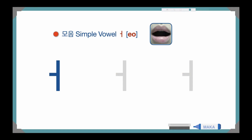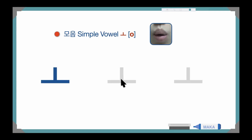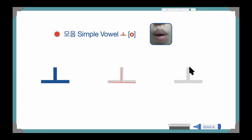And let's study the next one. This is 'oh', 'oh', 'oh'. Like this shape of your mouth — make your mouth like this. If you think about 'orange', maybe it will be easier to mimic this vowel: like 'orange' — 'oh', 'oh', 'oh'. Okay, let's write: from top to bottom, left to right — 'oh', 'oh', 'oh'.